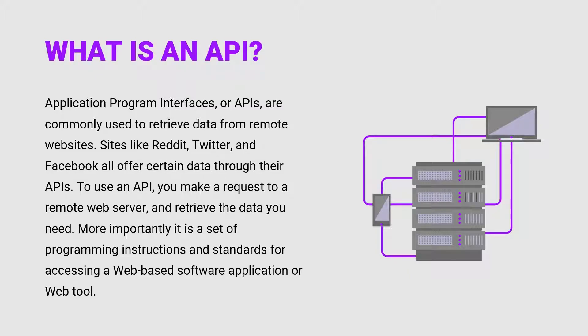So what is an API? Well, API stands for Application Program Interface, and we commonly use APIs to retrieve data from remote websites. A lot of the big tech companies — Twitter, Facebook, Google, Reddit, Yelp — I can name probably hundreds — a lot of these major companies offer certain data through their API. So if we access their APIs, we can make requests to get certain data back from them. For example, maybe I want to get the businesses around a certain location — I can use Google, Foursquare, or Yelp, make a request, and that information will be returned back to me.